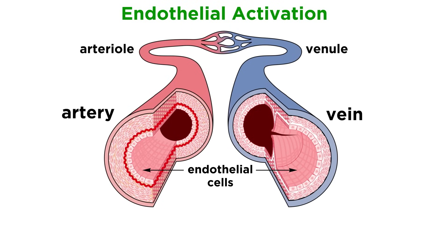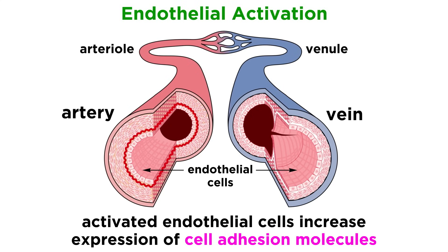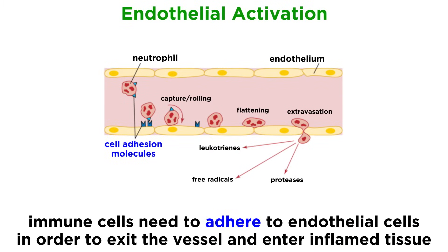The changes that occur to endothelial cells during inflammation result in endothelial activation. In addition to the pathways we've already discussed, activated endothelial cells also increase expression of cell adhesion molecules on their luminal side, which is the side facing the inside of the blood vessels. Expressing cellular adhesion molecules allows the vascular component to interact with the cellular component of inflammation, since circulating immune cells have to interact with the endothelium to move into tissues.